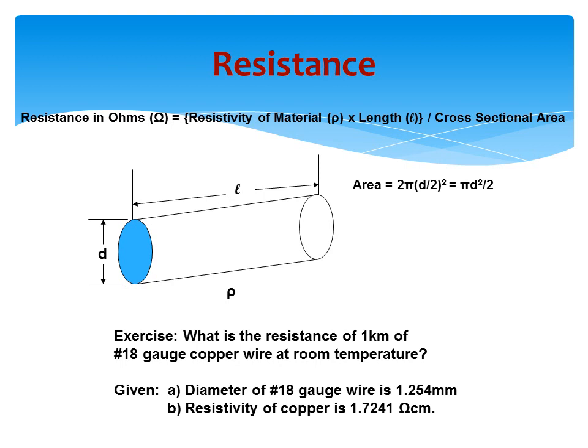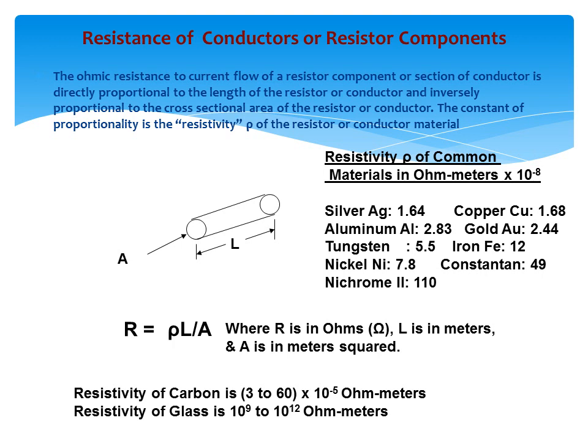What is the resistance of 1 kilometer of number 18 gauge copper wire at room temperature? The diameter of number 18 gauge wire is 1.254 millimeters. The resistivity of copper is 1.7241 ohm-centimeters. Resistance is directly proportional to the length of the conductor and inversely proportional to the cross-sectional area.